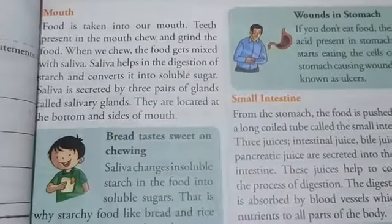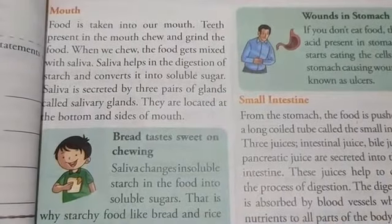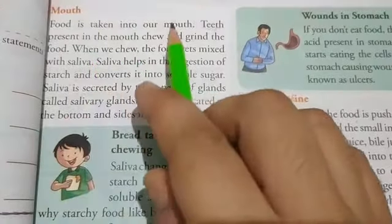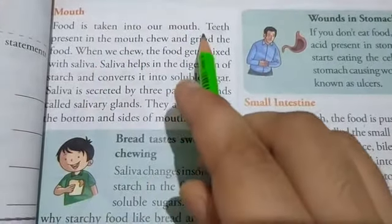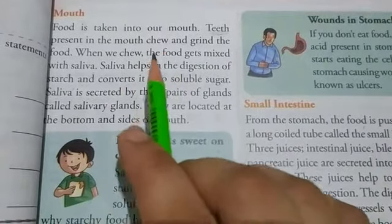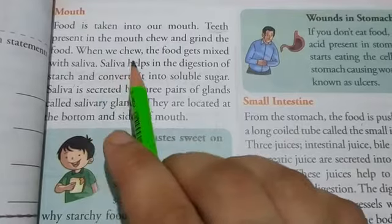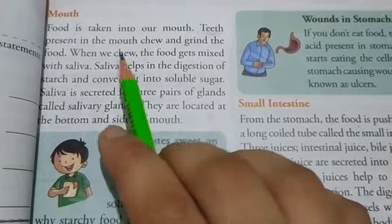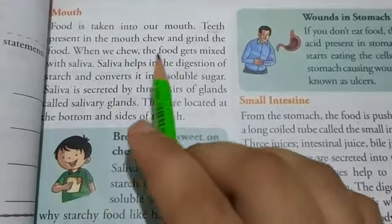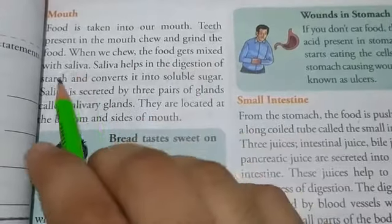We know that digestion starts from our mouth. The food that we eat, we place it into our mouth. Food is taken into our mouth and we know that there are teeth present in our mouth. The teeth chew and grind the food and convert it into small food particles. After chewing, the food gets mixed with the saliva.